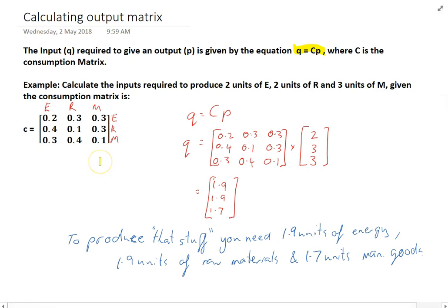Now in this video here we calculated the inputs required to produce this much and I made a point of saying that we wanted two units of energy, three units of raw materials and three units of manufactured goods. So that's eight units in total, eight in total.